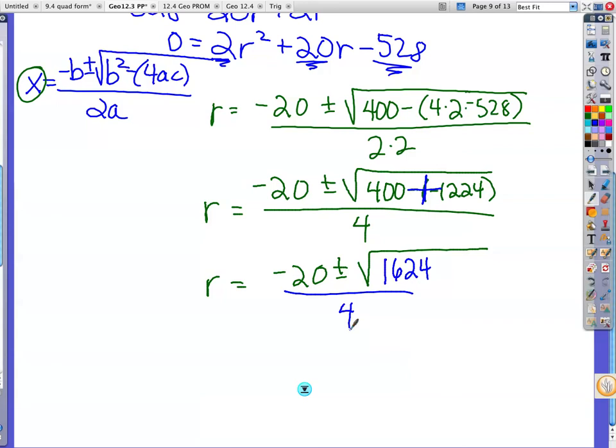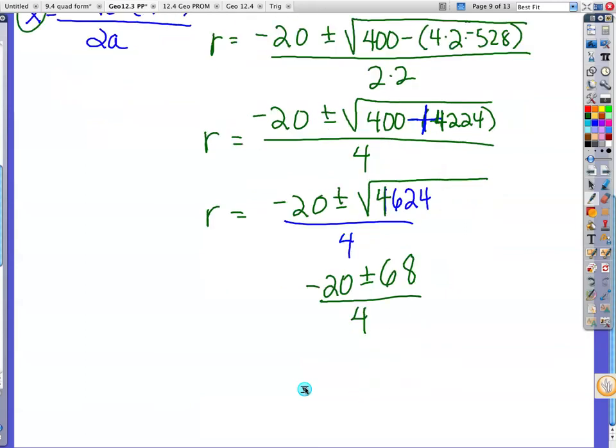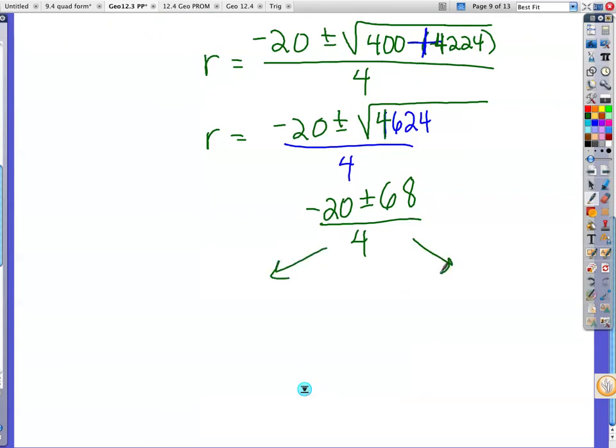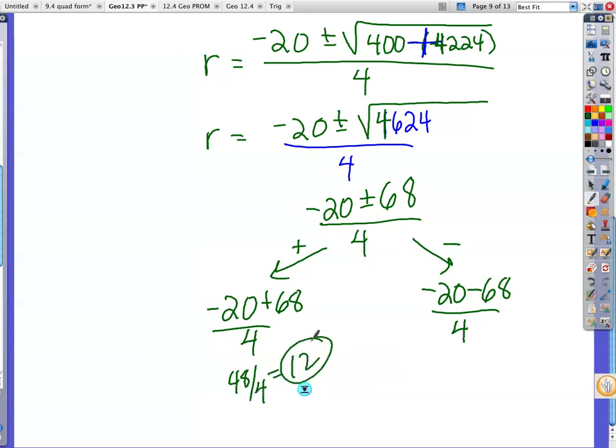And it so happens. Oh, this is a 4. Oh, almost another mistake. I'm trying to copy from my work. That's a 4. So this ends up being 4,624. It just so happens that the square root of 4,624 works out nicely to 68. So I have negative 20 plus or minus 68 over 4. Now what do you do? You're going to do a plus version and you're going to do the minus version. So I'm going to take negative 20 plus 68 divided by 4. I'm going to take negative 20 minus 68 divided by 4. This gives me 48 over 4, which is 12. That looks very potentially great. Negative 88 divided by 4 is negative 22. Uh-oh. Which is a more reasonable solution for a radius? 12 or negative 22? 12. So the radius is 12.